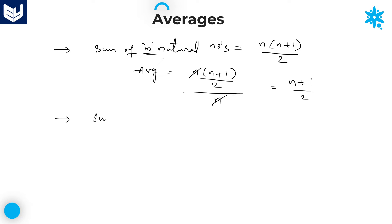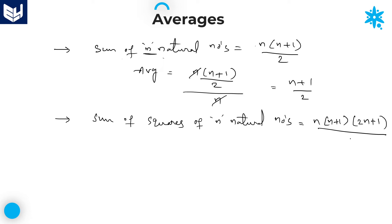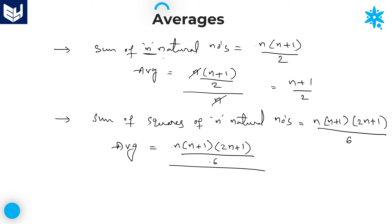The sum of squares of n natural numbers = n(n+1)(2n+1)/6. If you want to calculate the average of squares of n natural numbers, that equals n(n+1)(2n+1)/6 divided by n, where n cancels, giving the required average as (n+1)(2n+1)/6.